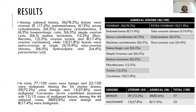Among the adnexal lesions, 36 (78.2%) were ovarian, which included 8 endometriomas, 6 serous cystadenomas, 3 mucinous cystadenomas, 3 hemorrhagic cysts, 3 simple ovarian cysts, 3 mature teratomas, 1 fibrothecoma, 1 case of torsion ovary, and 10 cases of carcinoma constituting 21.8%. Ten cases were extra-ovarian (21.8% of adnexal lesions), of which 5 were tubo-ovarian abscesses, 3 were hydrosalpinx, and 2 were para-ovarian cysts. In total, 77 of the 100 cases were benign, and 23 of the 100 were malignant.